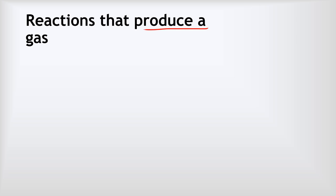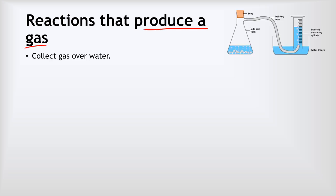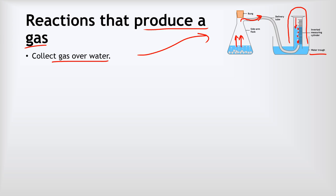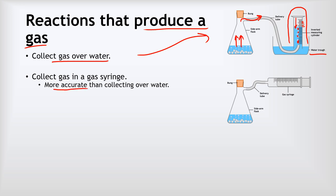For reactions that produce a gas, we can monitor their rate using one of three methods. Method one is collecting the gas over water. We have the reaction bubbling away in a flask, and as the gas is produced it passes along a delivery tube into an upside-down measuring cylinder full of water in a water trough. The gas bubbles up and displaces the water, and the amount collected can be read off the scale on the measuring cylinder. A more accurate way is to use a gas syringe. The gas passes through the delivery tube and is collected in the glass syringe, pushing the plunger outwards, and we can measure the amount of gas produced using the scale along the side.